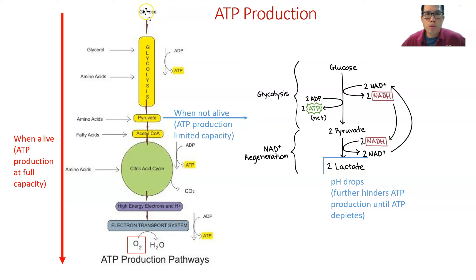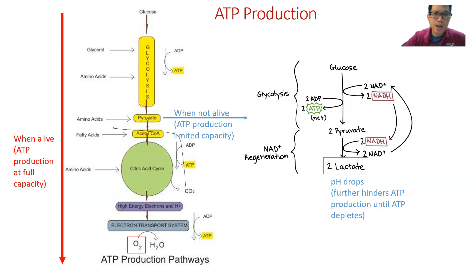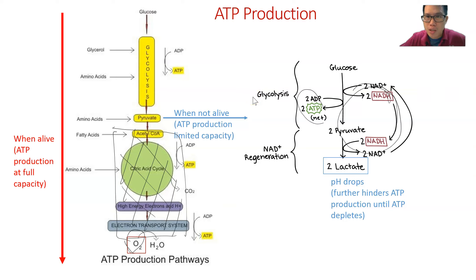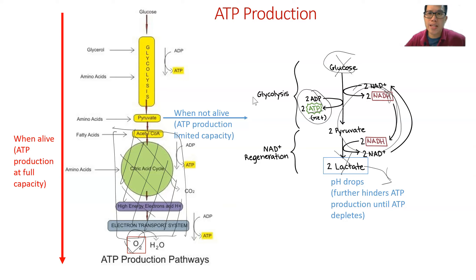Glucose — which can come from starch breakdown — feeds into this biochemical pathway. When the animal is dead, the mitochondrial steps can no longer occur. Only fermentation can proceed, producing only a minimum amount of ATP, and lactate accumulates and starts to affect the cells. As a result, ATP depletes very fast, leading to rigor mortis.